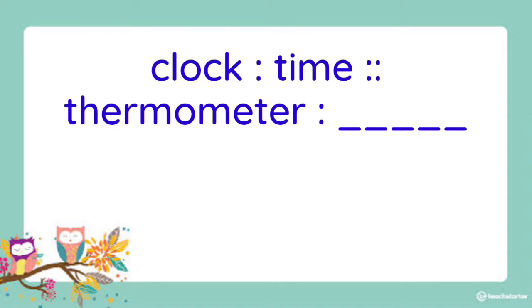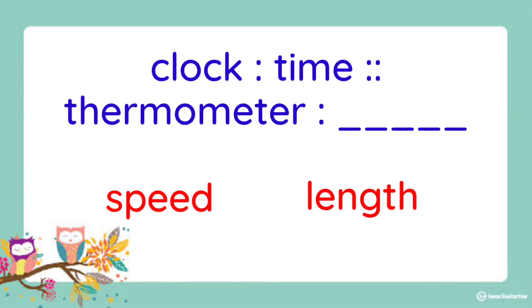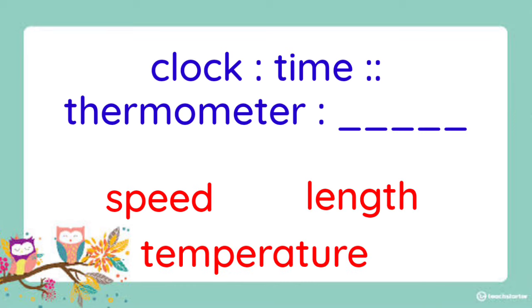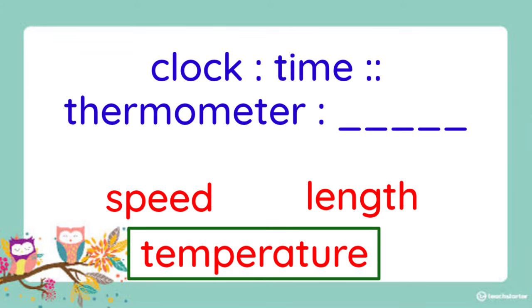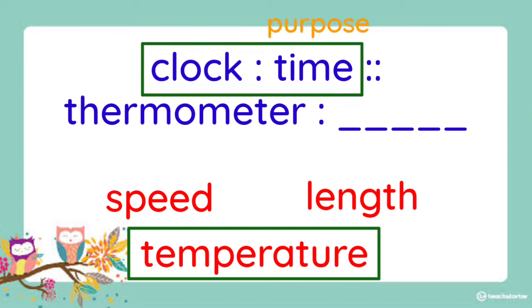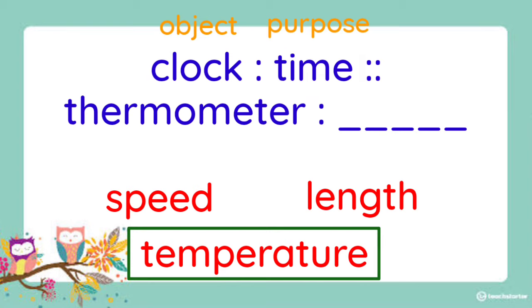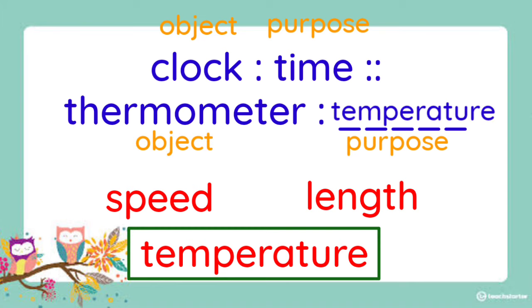Next. Clock is to time as thermometer is to blank. Is it speed, length, or temperature? The answer is temperature. Because the purpose or function of a clock is to tell the time. And so, the purpose or function of a thermometer is to tell the temperature.